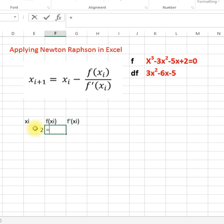So our function is this one, so x³ minus 3 times x² minus 5 times x plus 2.